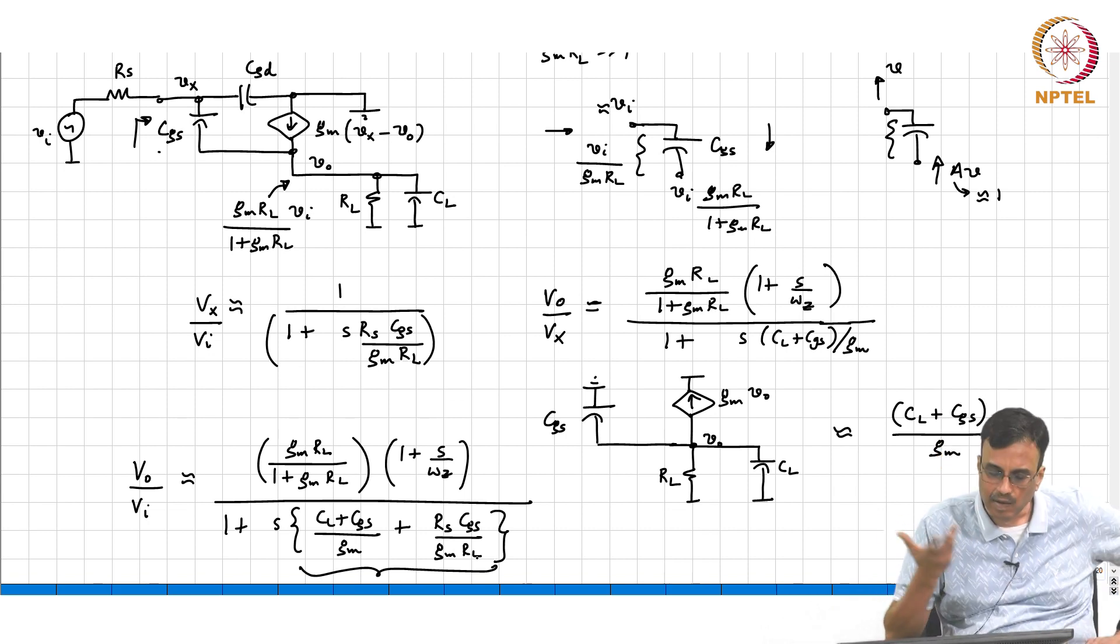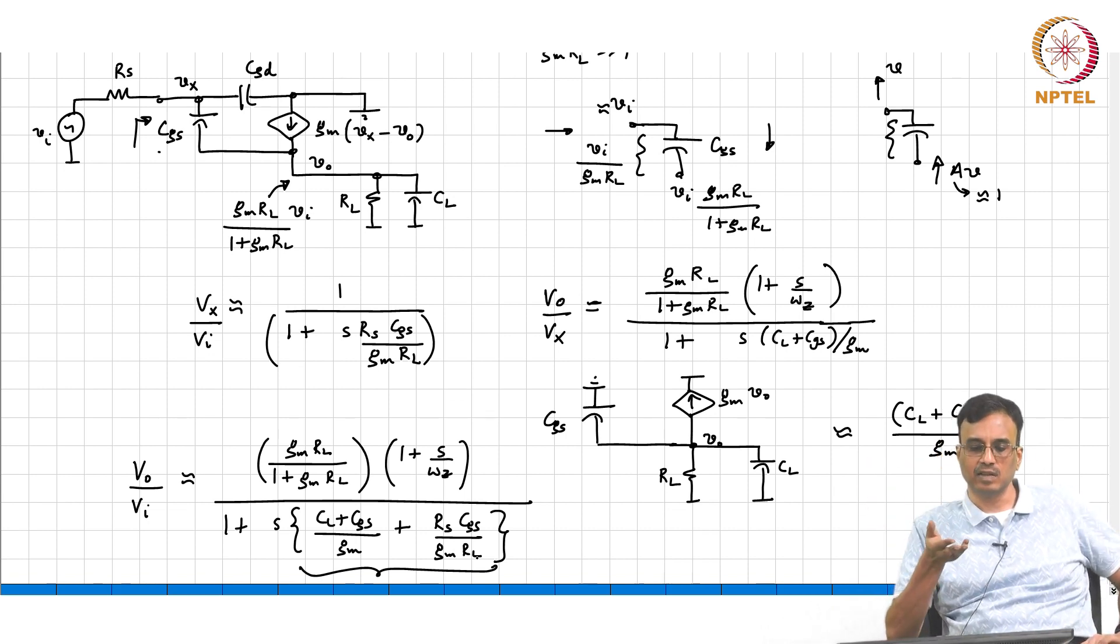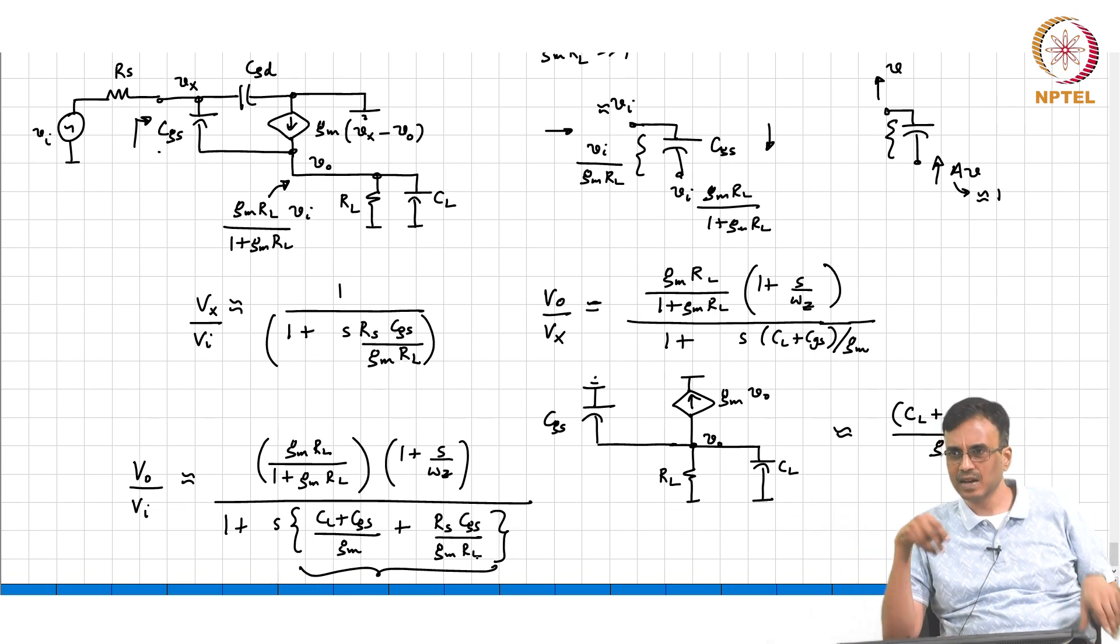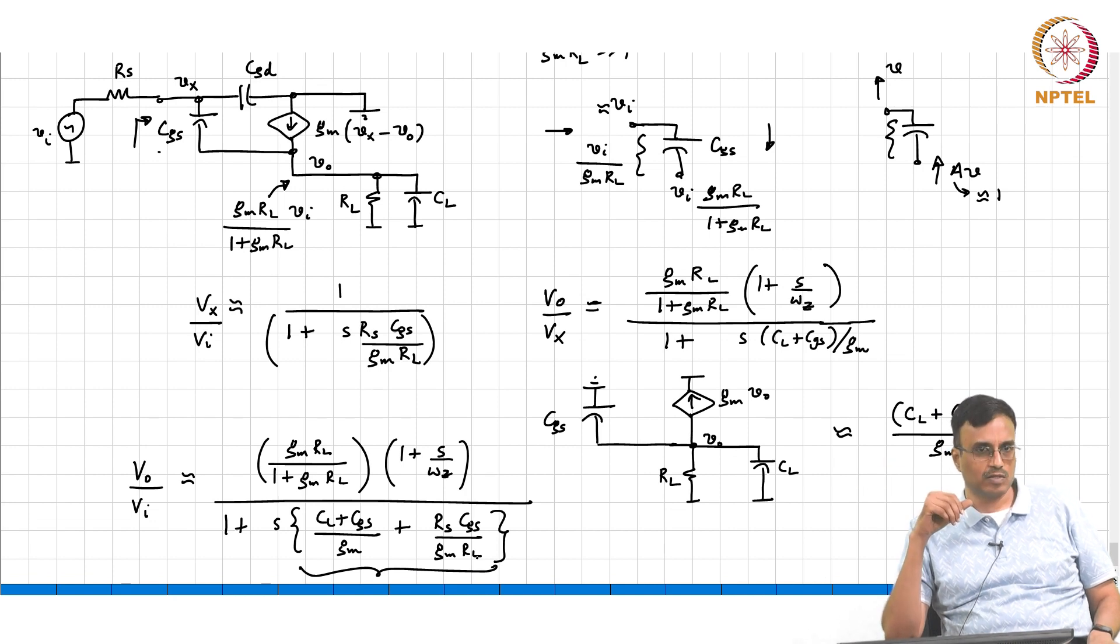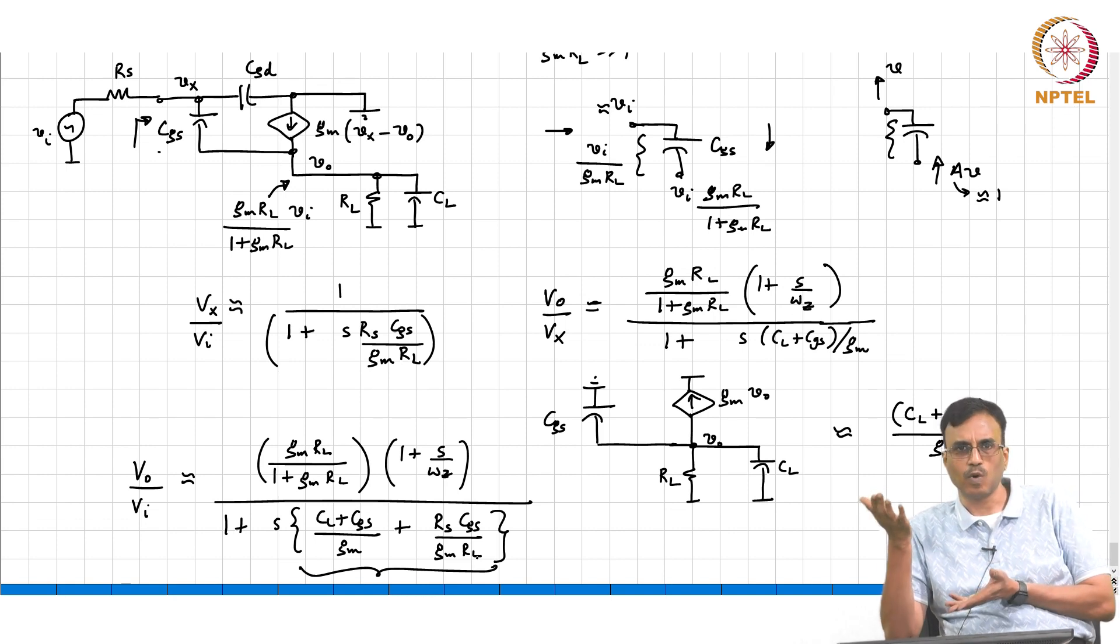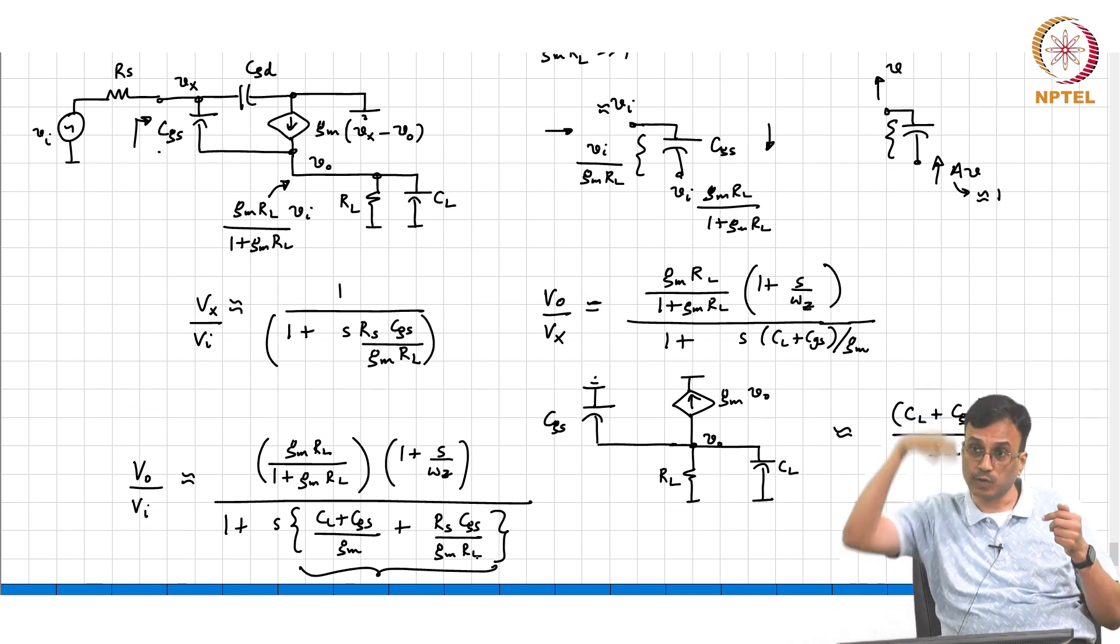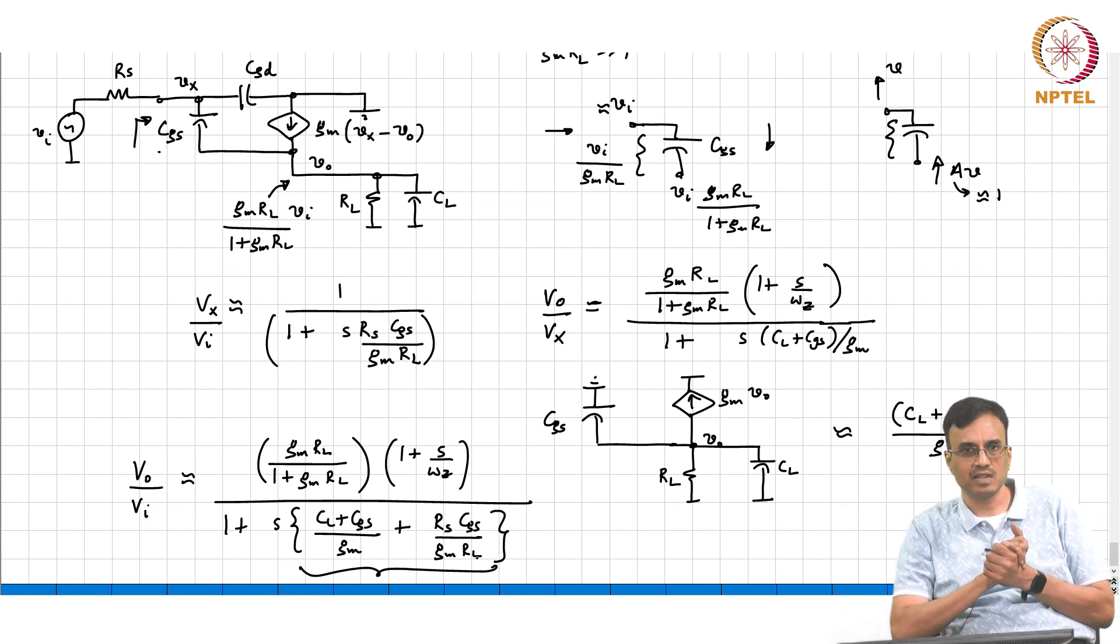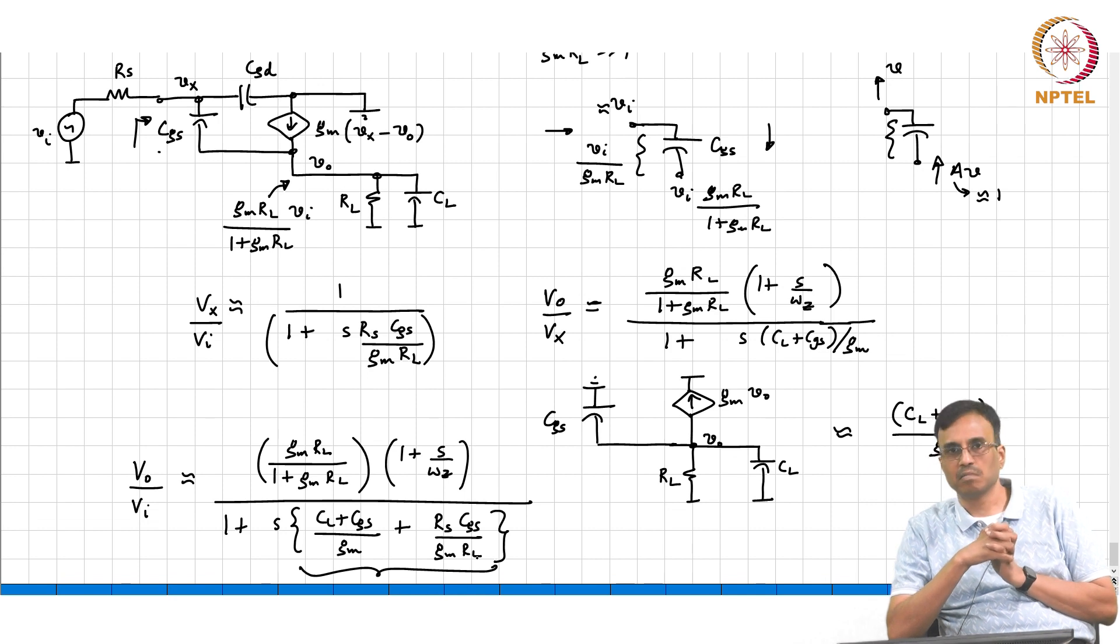And why does that make intuitive sense? Because remember the gain - what gain are we getting here? At DC approximately 1. So basically you can see that none of the voltages are swinging very much. So that basically means that capacitors charging and discharging had to be charged and discharged only to a small amount. Whereas in the common source amplifier, the output node is swinging a lot. That basically means that the capacitors have to be charged and discharged - a lot of charge is required which takes time to build. And therefore equivalent to saying that the amplifier is slow. You understand?